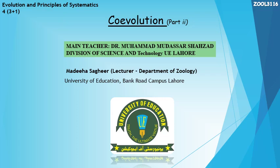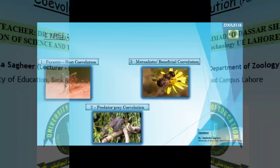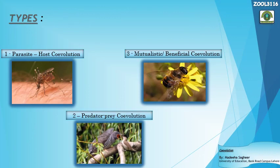Today we will complete this topic and discuss the rest of the types of co-evolution with their examples. To recap, in the first part we discussed three types of co-evolution but explained only the first type — parasite-host co-evolution. Today we will discuss predator-prey co-evolution and mutualistic or beneficial co-evolution.